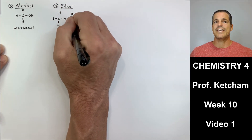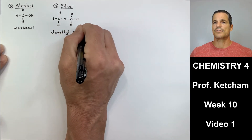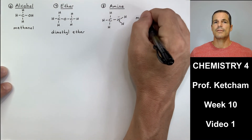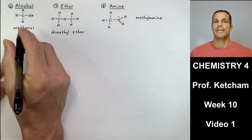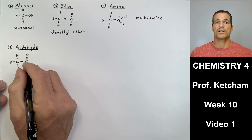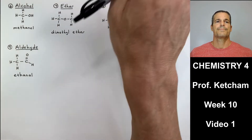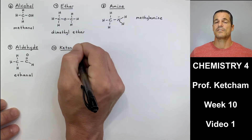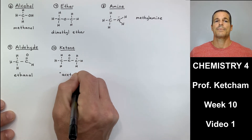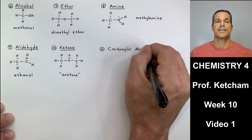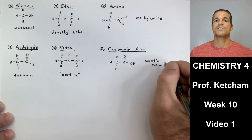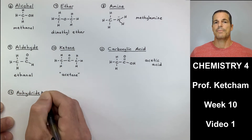Functional group seven are ethers — a C-O-C bond group, carbon single-bond oxygen single-bonded to a second carbon. Example: dimethyl ether. Number eight is an amine, A-M-I-N-E, with an NH2 group. Example: methylamine. Number nine are aldehydes, which have a carbonyl carbon — C double-bonded to O — also attached to a hydrogen, making it a terminal carbon. Example: ethanal. Number ten are ketones, an internal carbonyl group, C double-bonded to O in the middle. Example: acetone. Number eleven, carboxylic acid, has a C double bond O also attached to an OH. Example: acetic acid.